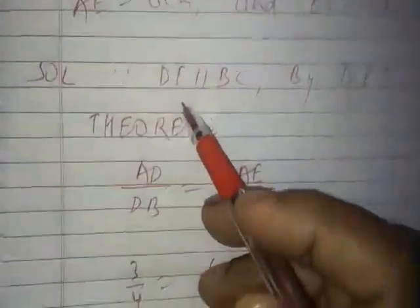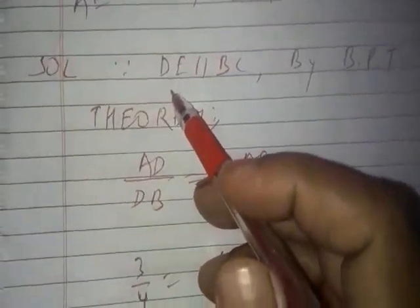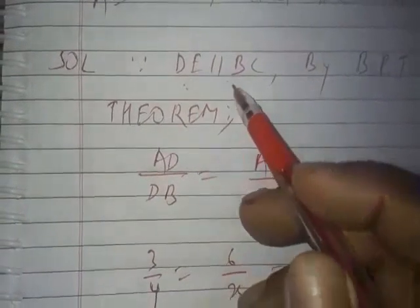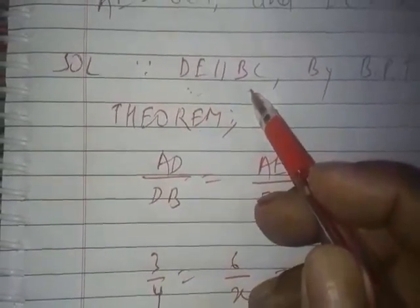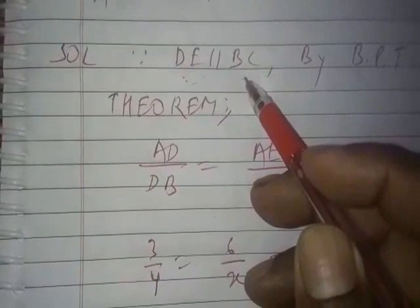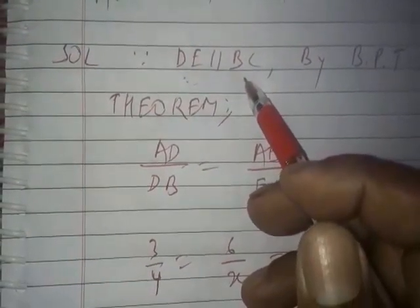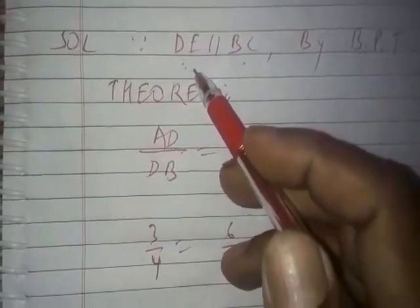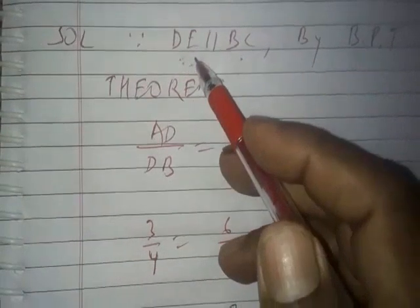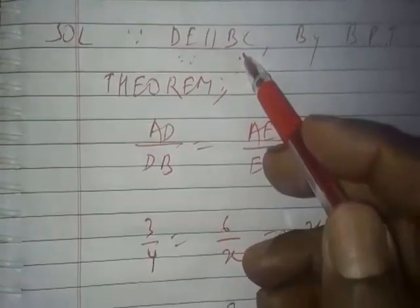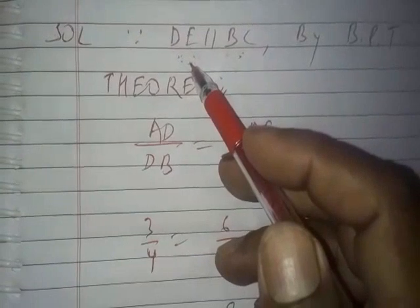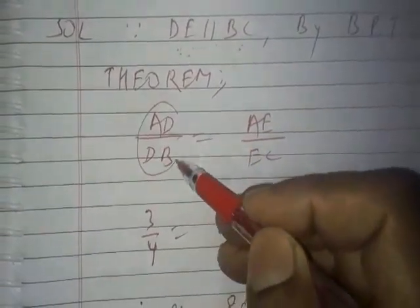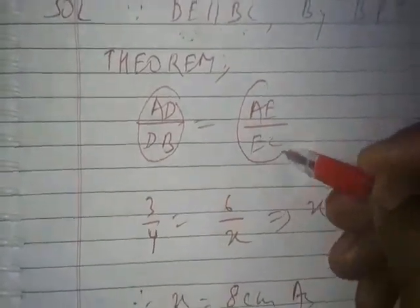As we are aware, in a triangle, if a line is parallel to any side, then it divides the remaining two sides in equal ratio. Since in triangle ABC, DE is the line segment which is parallel to BC, so it will divide the remaining two sides AB and AC in equal ratio.